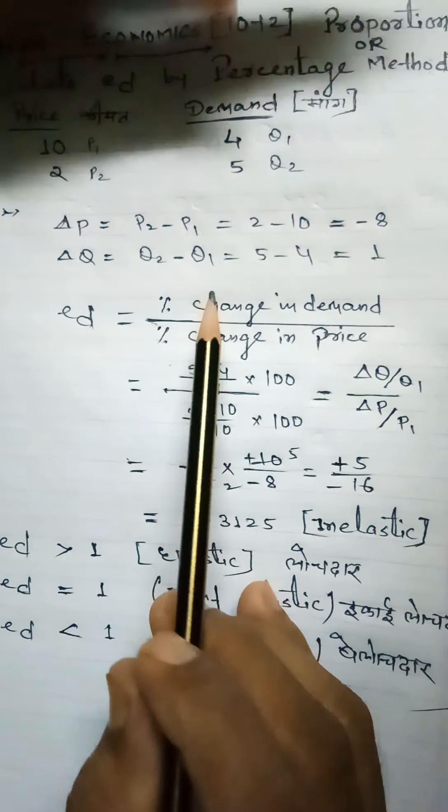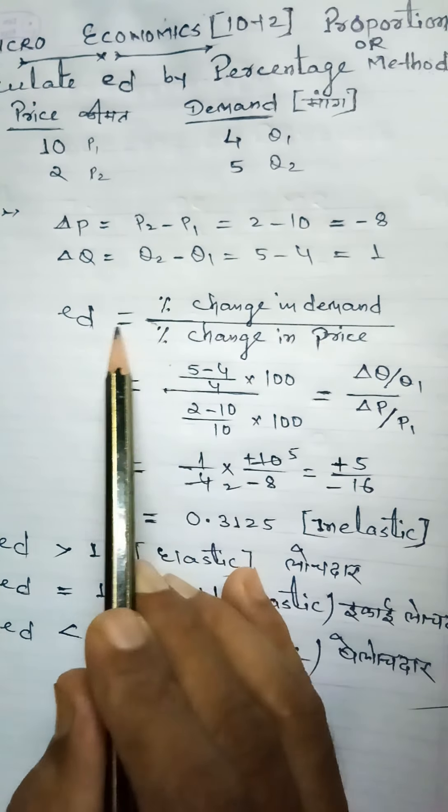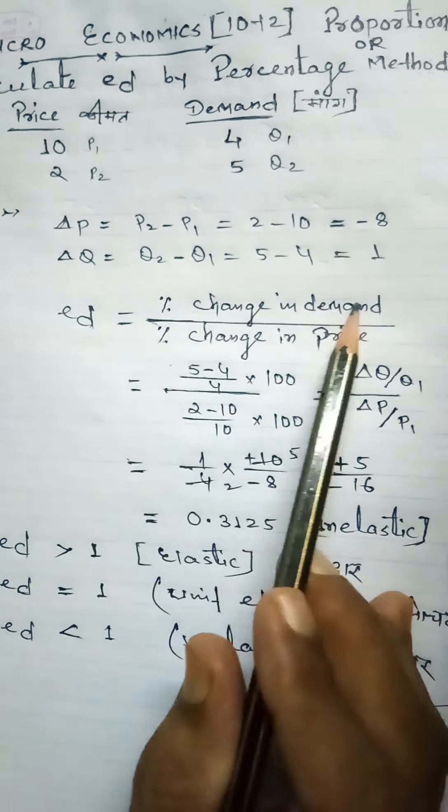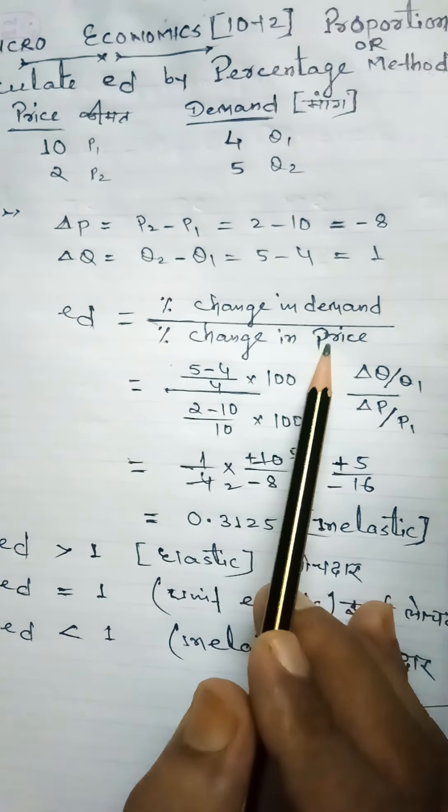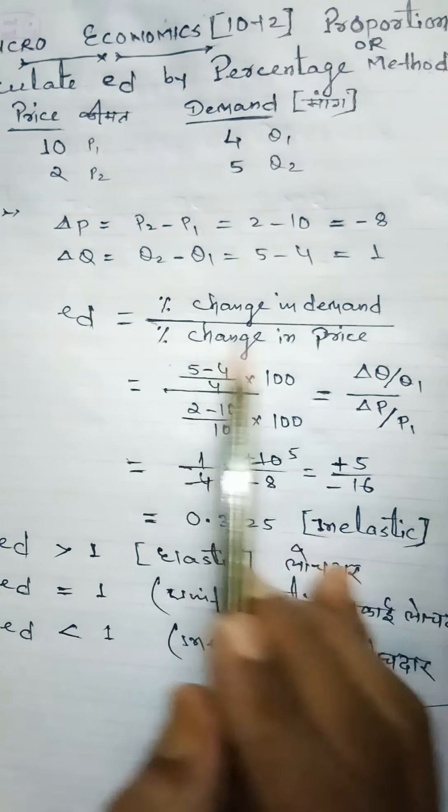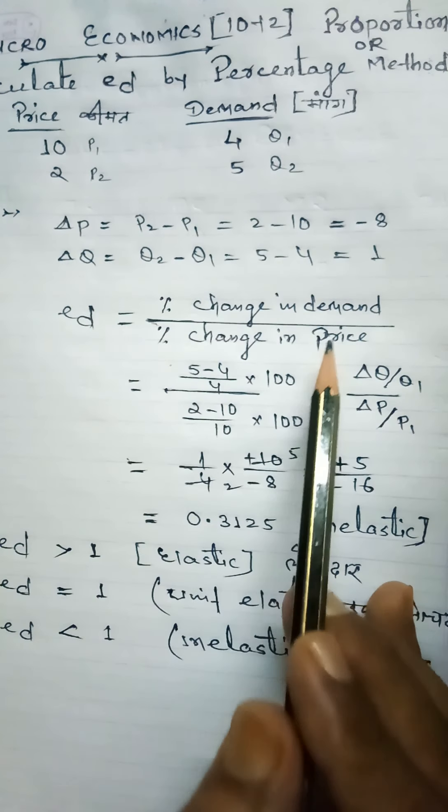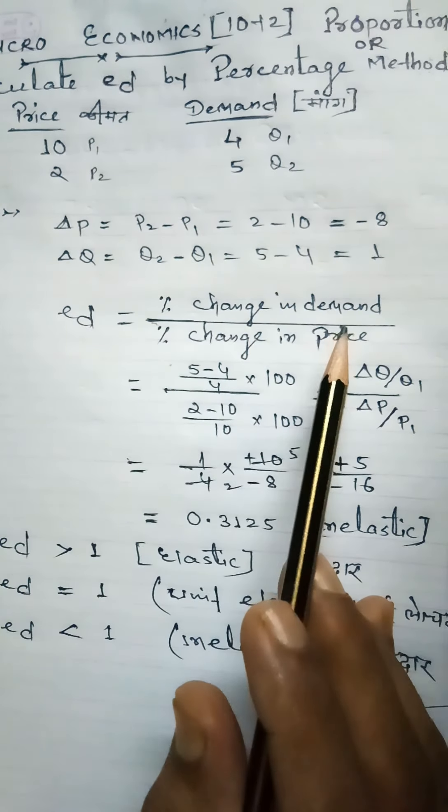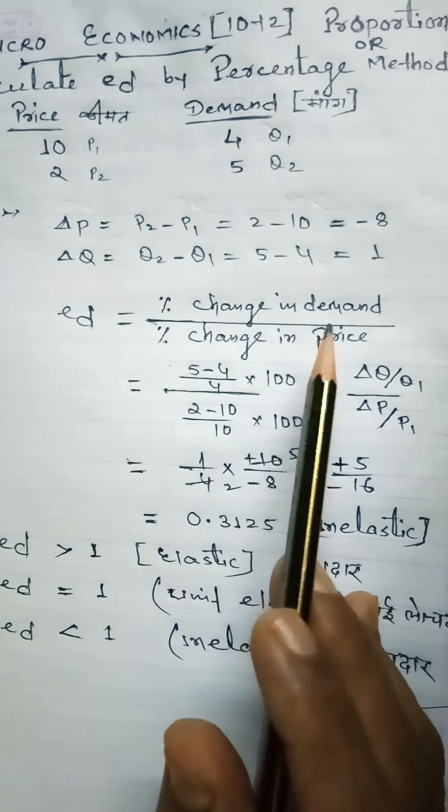For the percentage method, write the formula: Elasticity of Demand equals percentage change in demand divided by percentage change in price. In Hindi, this is mang mein pratishat parivartan by keemat mein pratishat parivartan. You can solve in English, no problem.